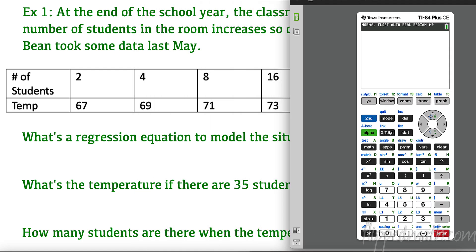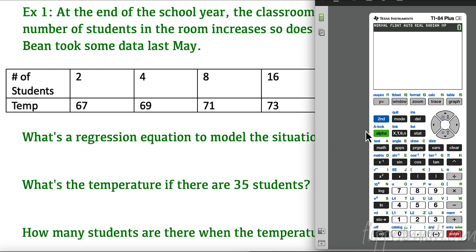We're going to put that into our calculator. Hopefully by now you're getting pretty good at these regressions. We're going to go to stat, we have to edit, and in L1 we're putting our list of x, our number of students. I'm going to put 2 enter, 4 enter, 8 enter, and 16 enter. Hopefully you are becoming a whiz with regression. My y values are going to be 67, 69, 71, and 73.